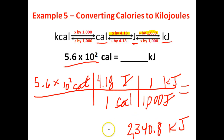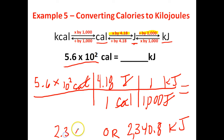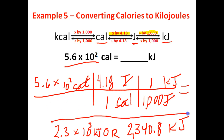Or if you want to convert this into scientific notation, if your teacher wants you to put it in scientific notation, this will be 2.3 times 10 to the third kilojoules. Either one of these two answers should be acceptable. I hope this was helpful. Have a good day.